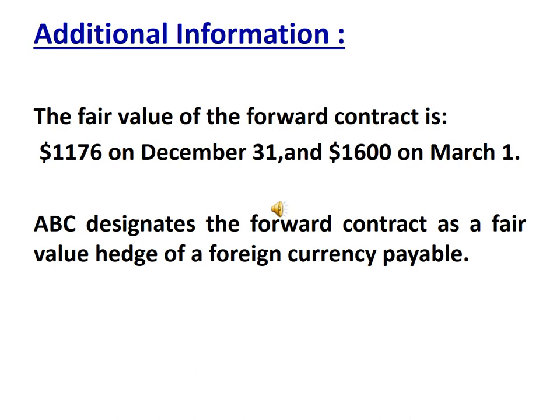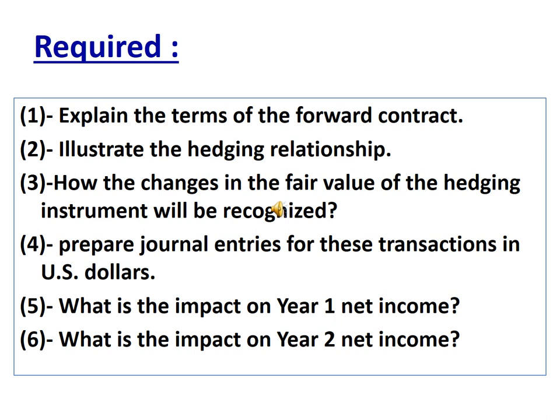The forward contract is designated as a fair value hedge of a foreign currency payable. We are asked five questions: Number 1, explain the terms of the forward contract. Number 2, restate the hedging relationship. Number 3, how will the changes in the fair value of the hedging instrument be recognized? Number 4, prepare journal entries for these transactions in U.S. dollars. Number 5, what is the impact on Year 1 net income, and what is the impact on Year 2 net income?